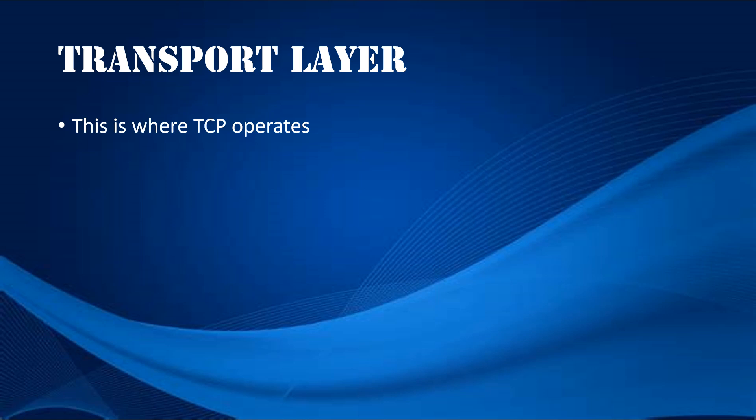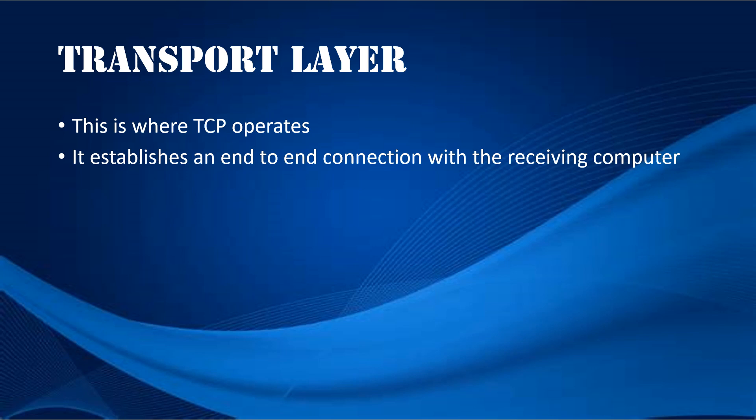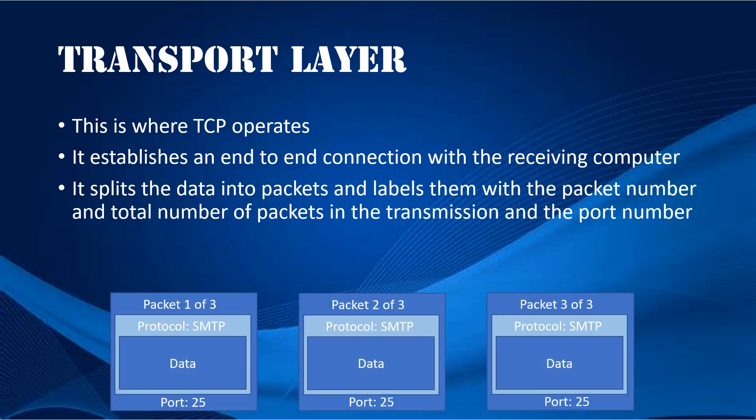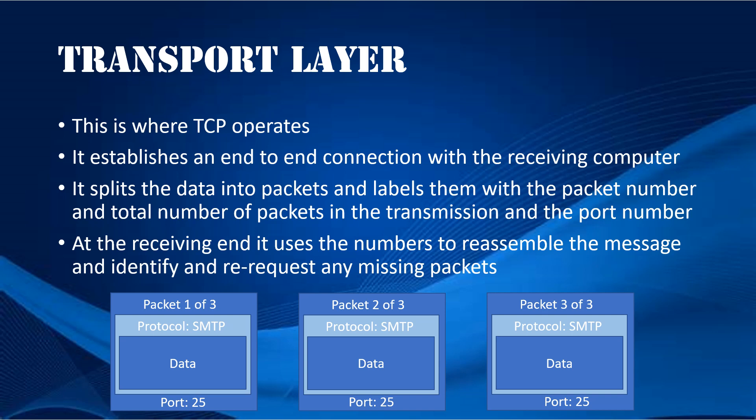The Transport Layer is where Transmission Control Protocol operates. It establishes an end-to-end connection with the receiving computer. It then splits the data into packets and labels them with the packet number and total number of packets in the transmission, as well as the port number, which is dependent on the protocol. At the receiving end, the Transport Layer uses the packet numbers to reassemble the message and identify and re-request any missing packets.